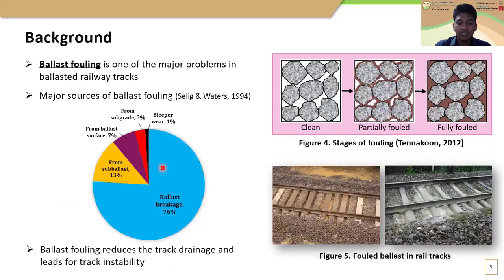Ballast fouling is one of the major problems in ballast tracks. As you can see in this figure, newly placed ballast has uniformly graded and angular shape aggregates that include large void spaces, and that helps to ensure proper drainage. However, during track operation, particle breakage of ballast is significant due to repetitive train loads, so the generated fine particles from ballast breakage as well as from other sources fill the void spaces in the ballast layer as shown in this figure.